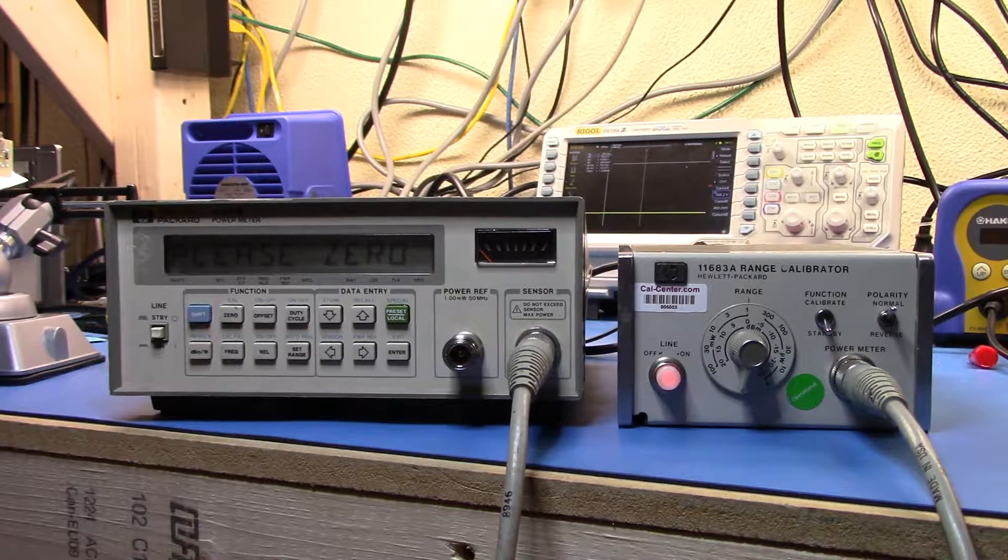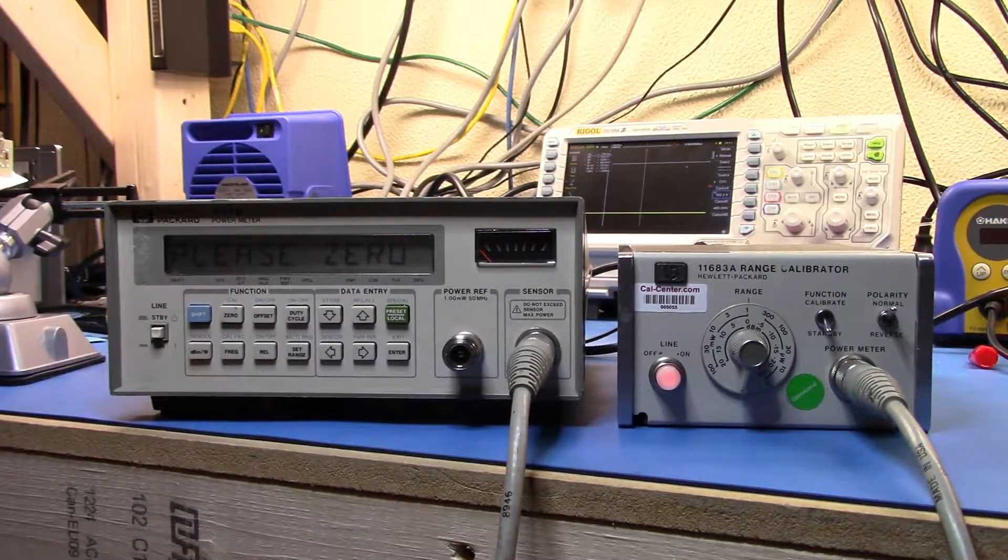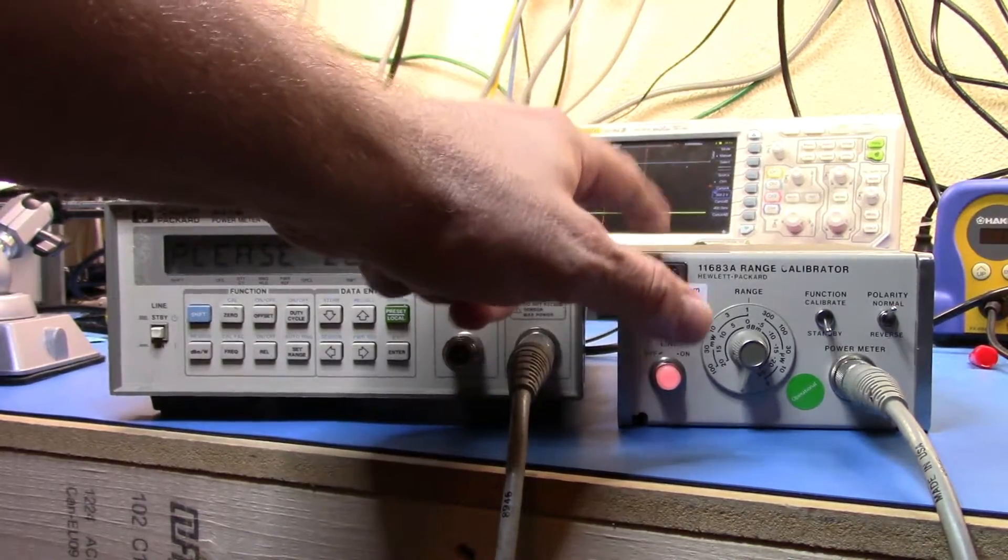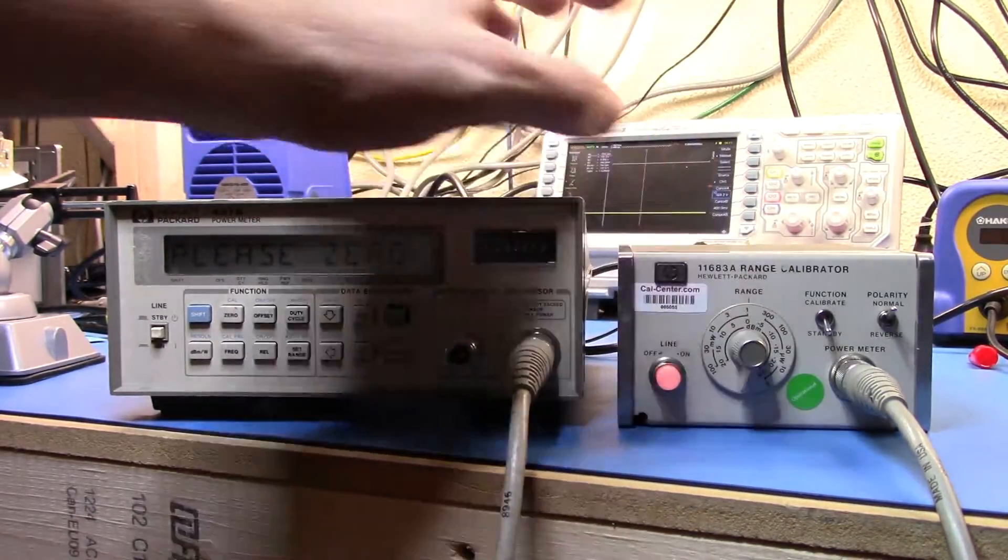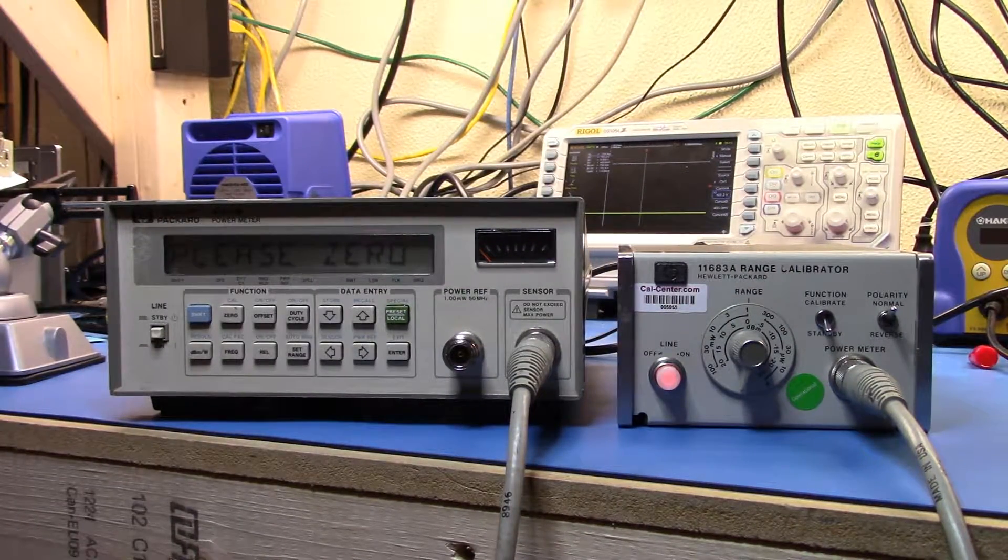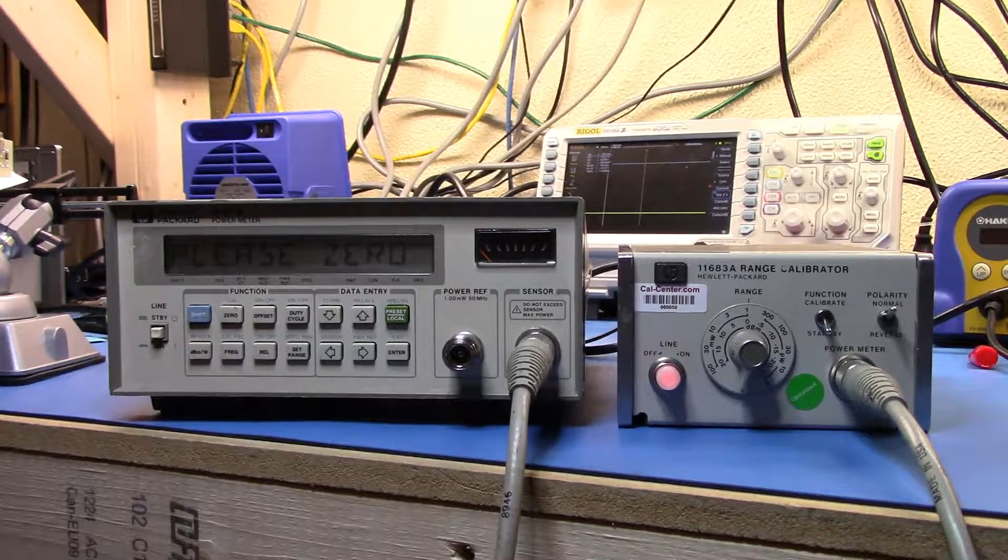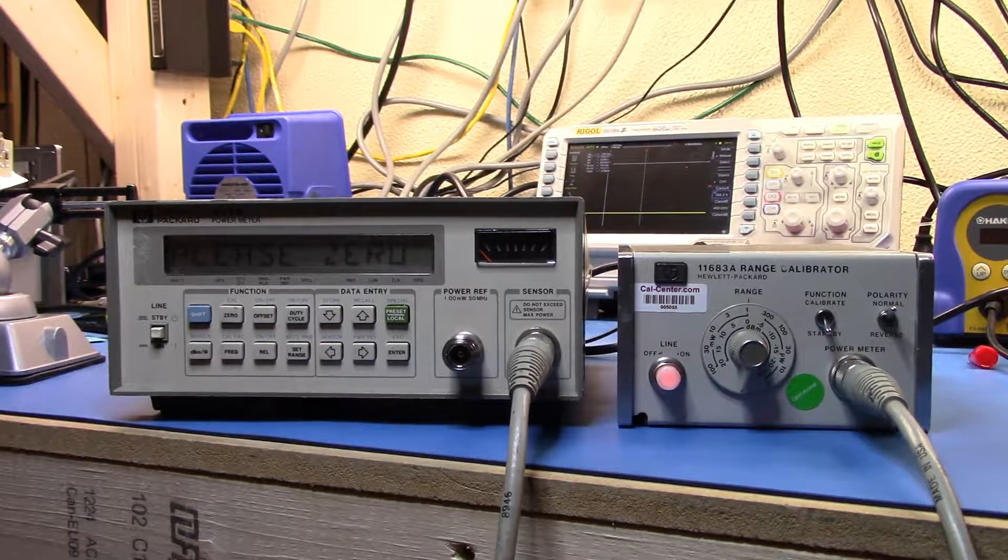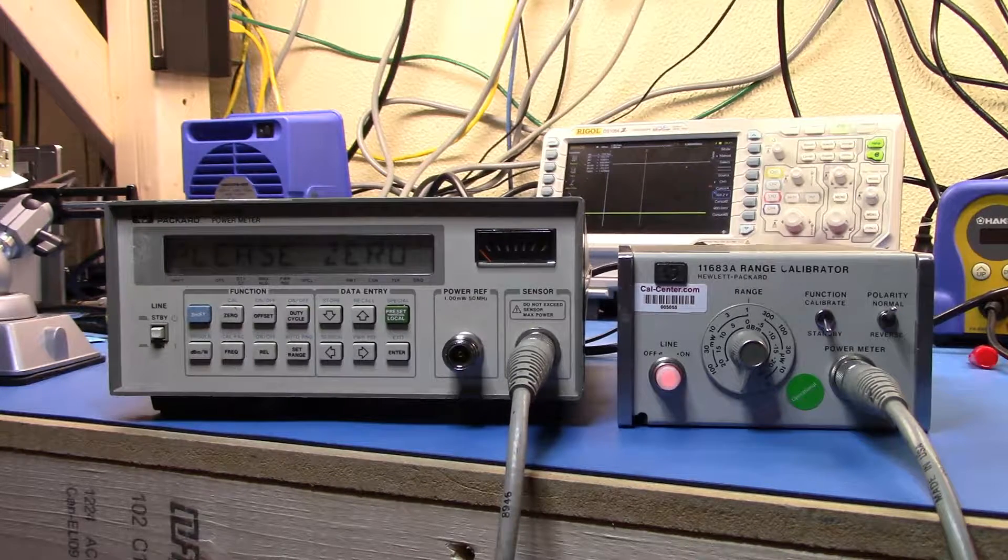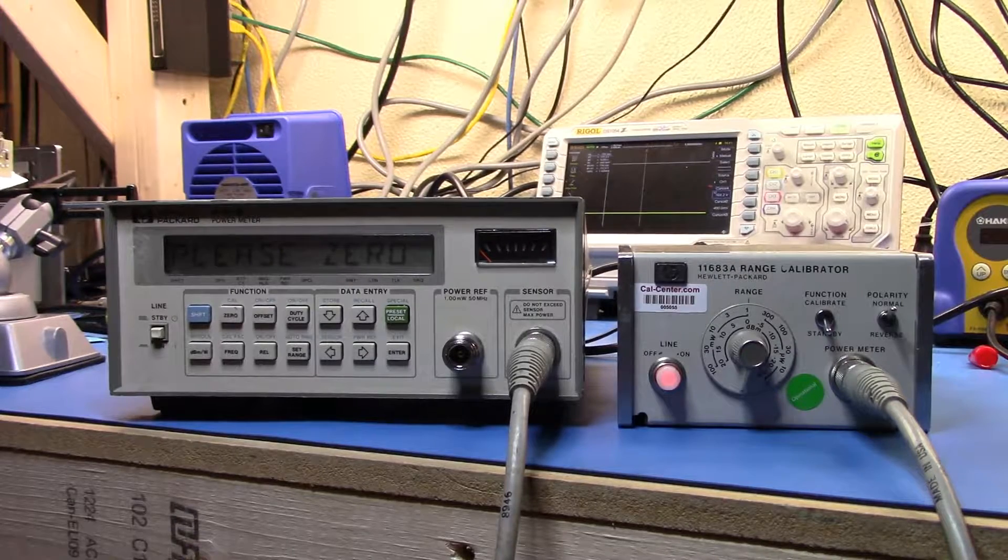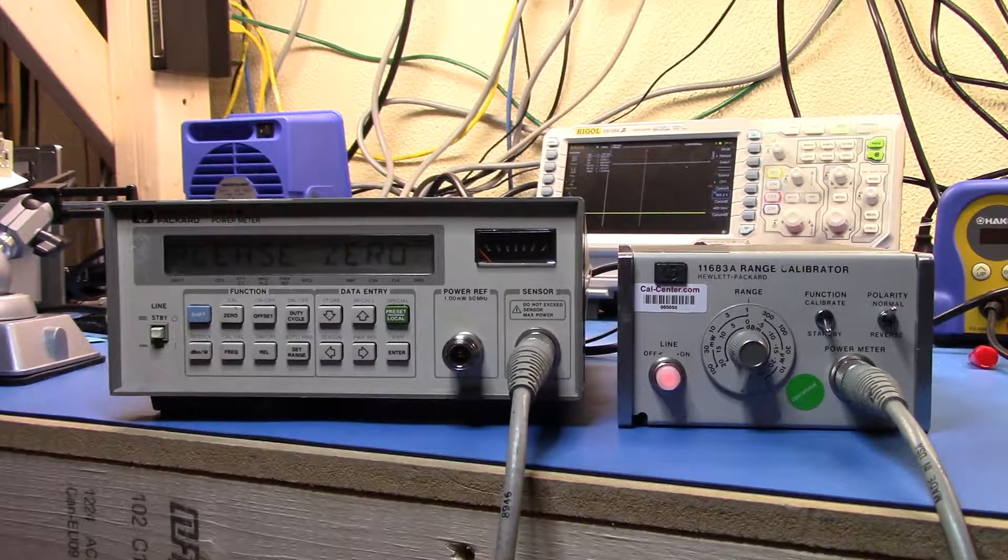Okay, here we are with my dad's 437B and what I've got it hooked up to here is an 11683A range calibrator. This is a piece of kit that's specifically designed to calibrate these series of power meters and this particular one I purchased from CalCenter Calibration Lab down in Texas that was able to get it to me and have it calibrated so I'm fairly happy with where that stands. So what I wanted to do now was just run through the performance tests for the 437B and see how they go.